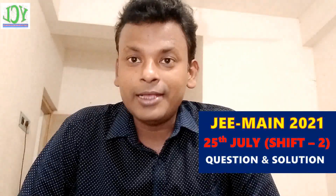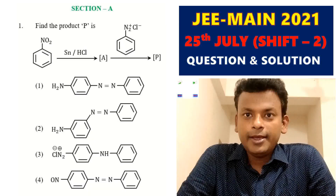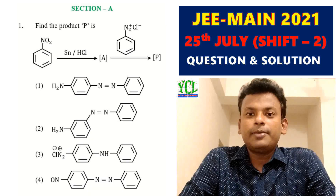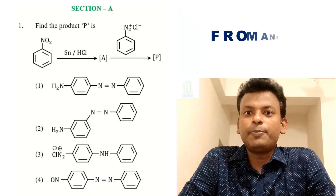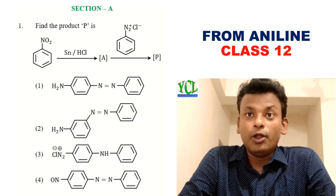Hello students, welcome to your chemistry lab. Today I am discussing the 25th July second shift question paper and solution for JEE Main 2021. We are now watching the whiteboard. Section A, Question number 1: Find the product of the following reaction.